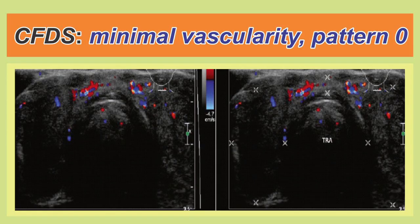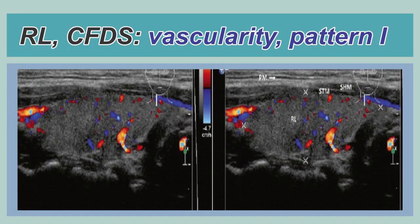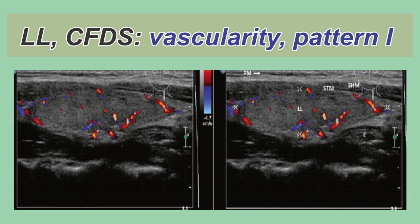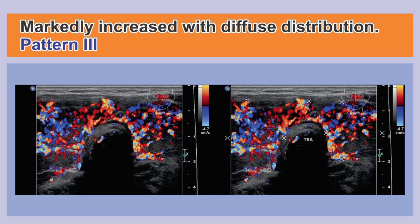Pattern 0 shows minimal vascularity with minimal spots in the thyroid gland. Pattern 1 shows patchy blood flow with uneven distribution — this can be seen in both the right lobe and the left lobe of the thyroid gland. Pattern 2 shows mildly increased vascularity with patchy distribution. Pattern 3 shows markedly increased vascularity with diffuse and homogenous distribution.